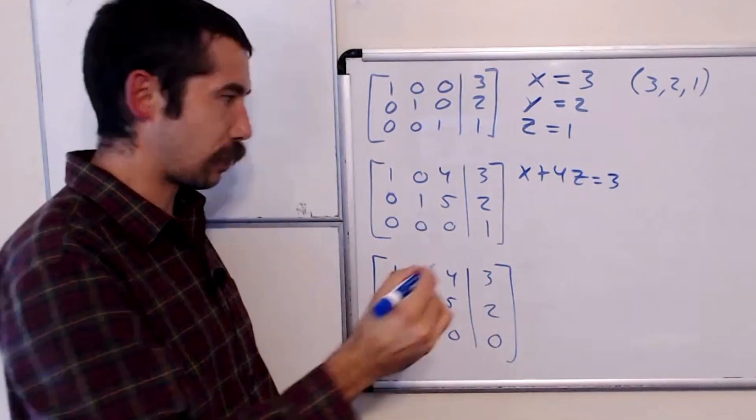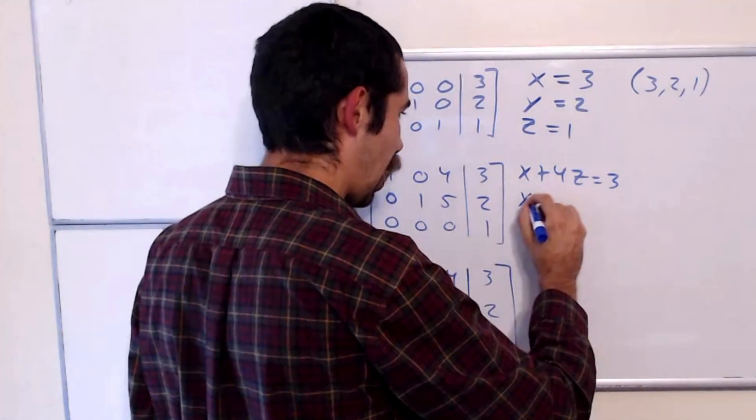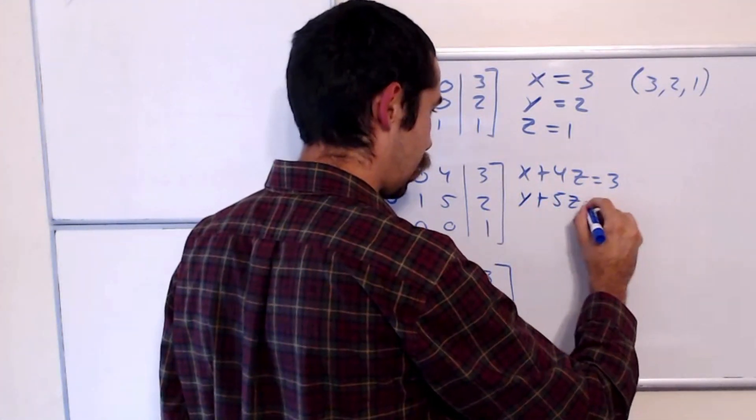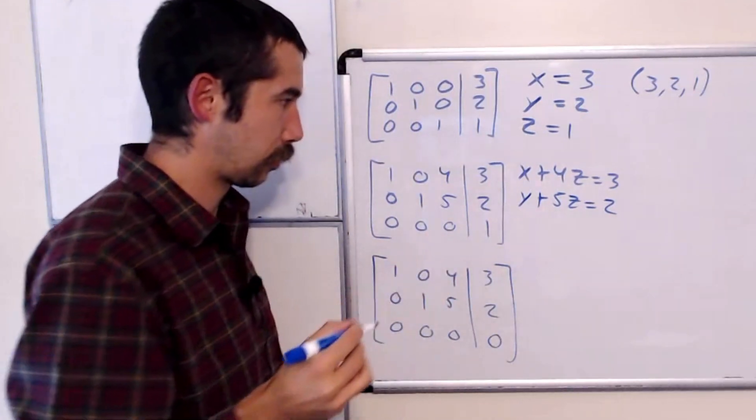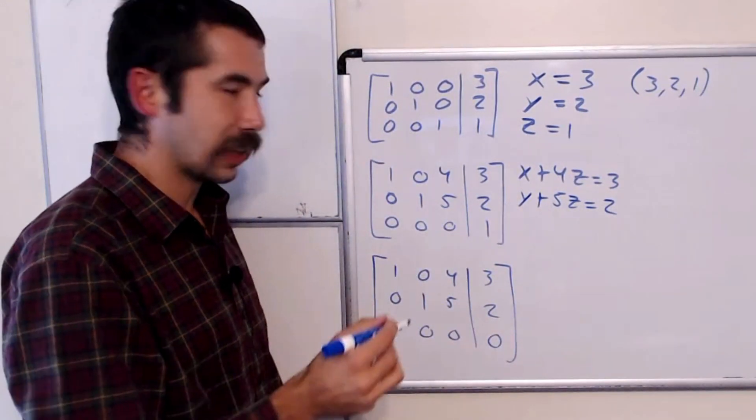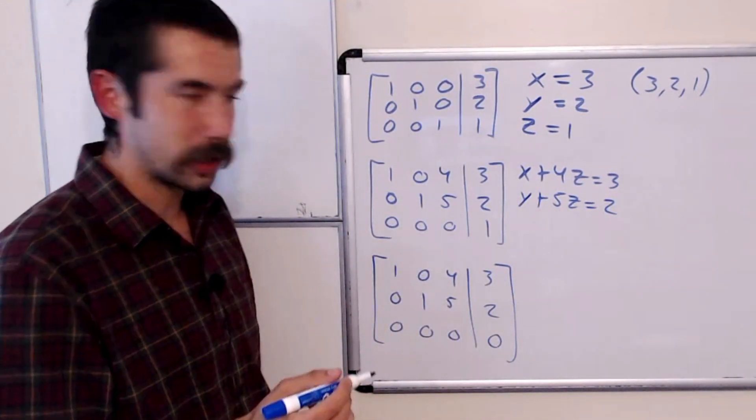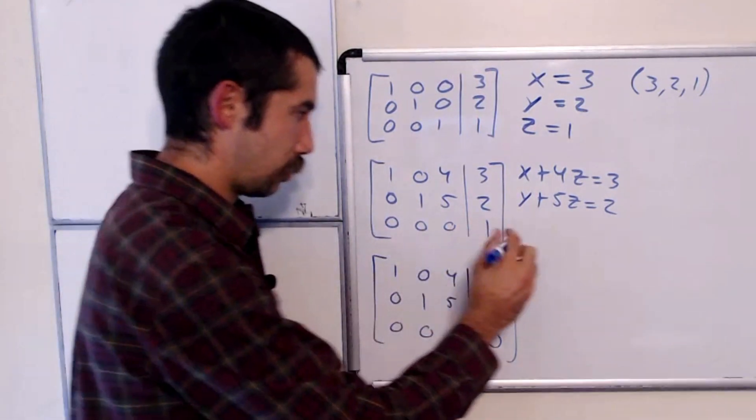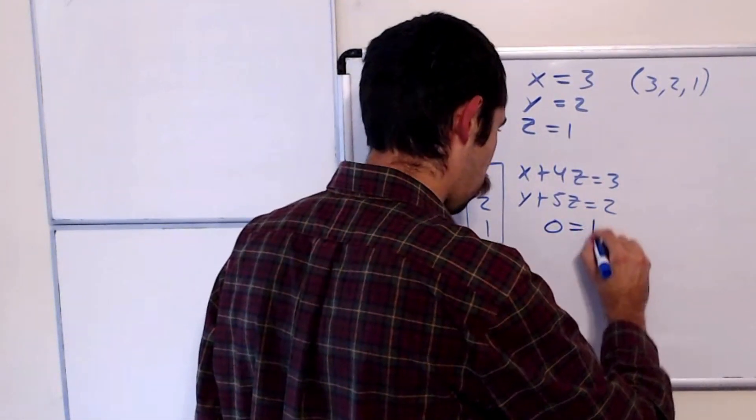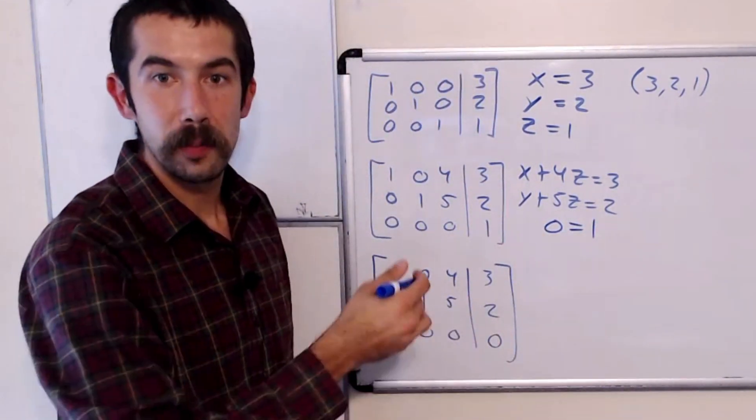The next row corresponds to y plus 5z equals 2. And the last row corresponds to 0 equals 1. But that's a contradiction.